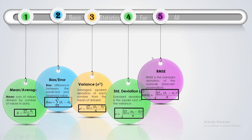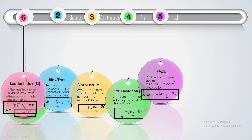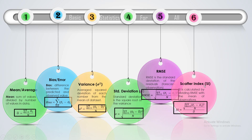The fifth one is root mean square error. Here the error is the forecasted value minus the observed value. You square the error, calculate the mean, and then apply the root — that gives you the root mean square error. The sixth parameter is the scatter index, which is related to RMSE. It is calculated by dividing the RMSE by the mean of the observations — that is, RMSE divided by o-bar.